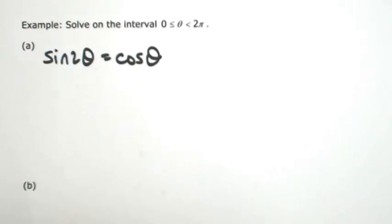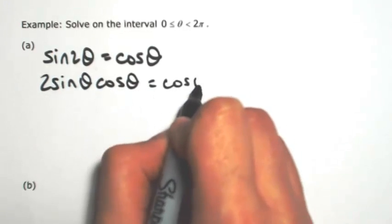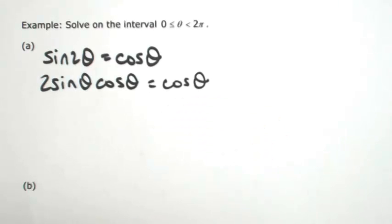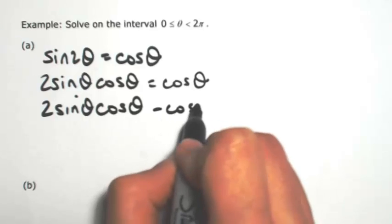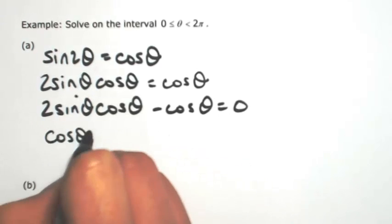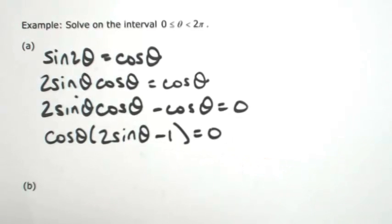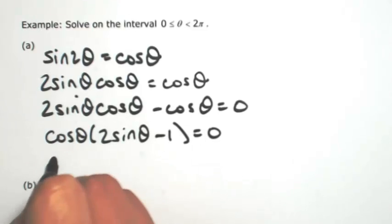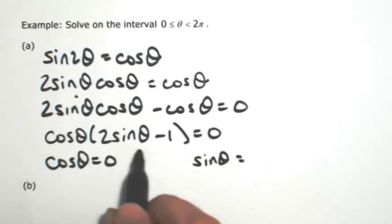So the first thing I'll do is expand out sin2θ as 2sinθcosθ, and then bring the cosθ to the left side so that I can set this equal to 0. So now we can factor. Out of both terms, I can pull a cosθ out. Setting each factor to 0, we have cosθ = 0. For sinθ, solving this would be 1/2.